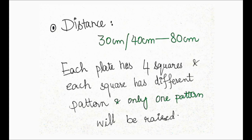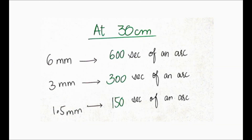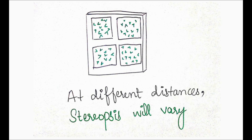You have to show all three plates one by one — first the 6 mm plate, then the 3 mm plate, then the 1.5 mm plate. Inform the patient that the test will not harm them; it is a simple test where they just need to hold a plate and tell you which pattern is slightly raised. Then ask the patient to hold the plate at 30 cm.